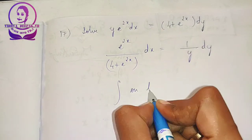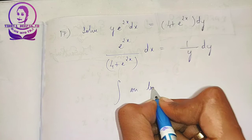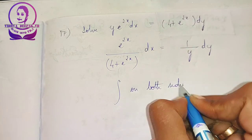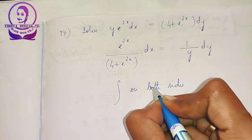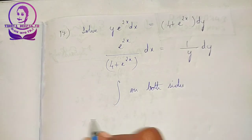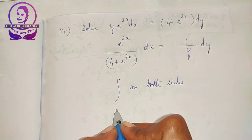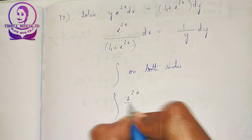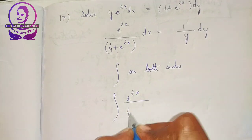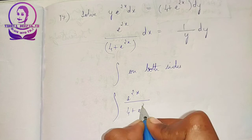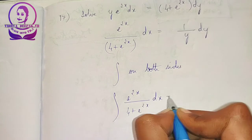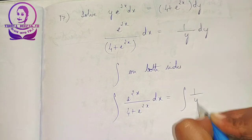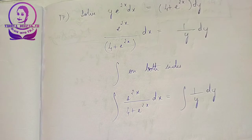Integrating on both sides, we have integral e to the power of 2x divided by 4 plus e to the power of 2x dx is equal to integral 1 by y dy.